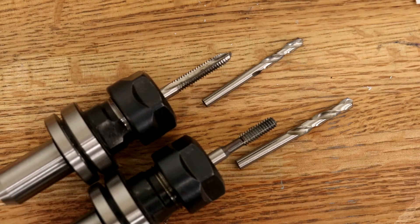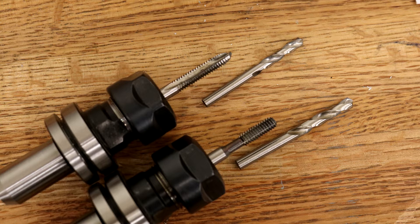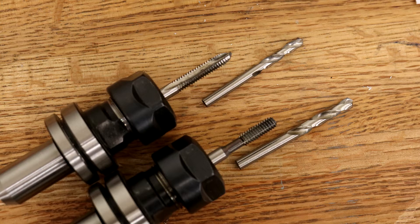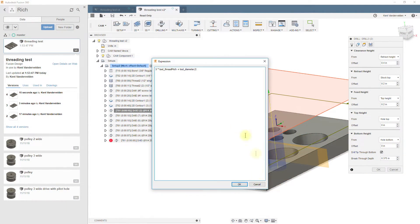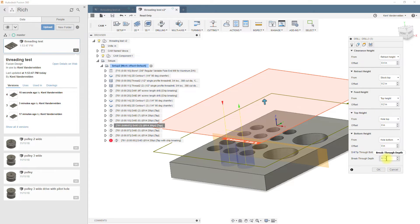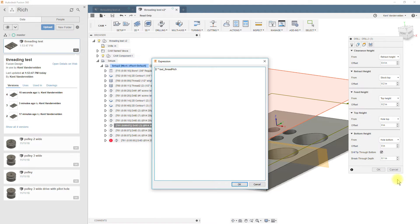The forming taps require a different size drill bit and they deform the metal instead of cutting the metal. More of the tap is also available for threading. To compensate for the threads that are not usable, you have to change the breakthrough amount in Fusion 360. That can be parameterized by the thread pitch.